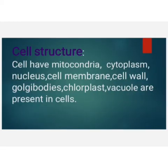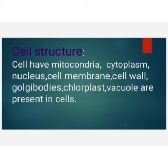In the previous lecture, we discussed about the cell. The cell is a building block of the human body. Then we have seen that there are two types of cells. We will see the cell structure — which things are composed of cells and which things are important in the cell for the function of the human body.